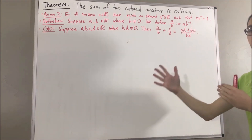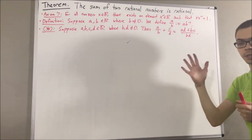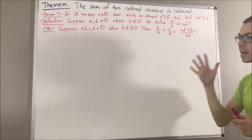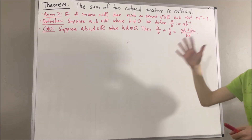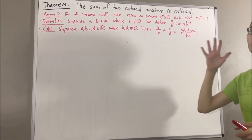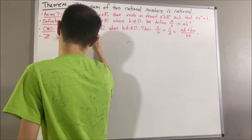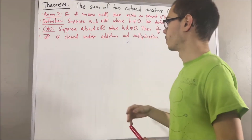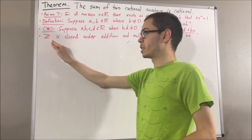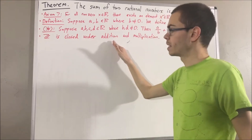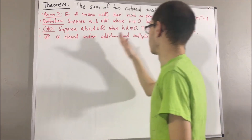In our real number system, we have defined the integers as a subset of the real numbers. We have proven that the sum of two integers is an integer, and the product of two integers is an integer. In other words, we have proven that the set of integers is closed under addition, and the set of integers is closed under multiplication.